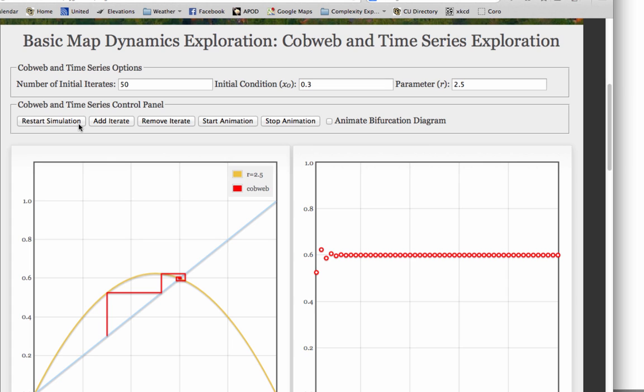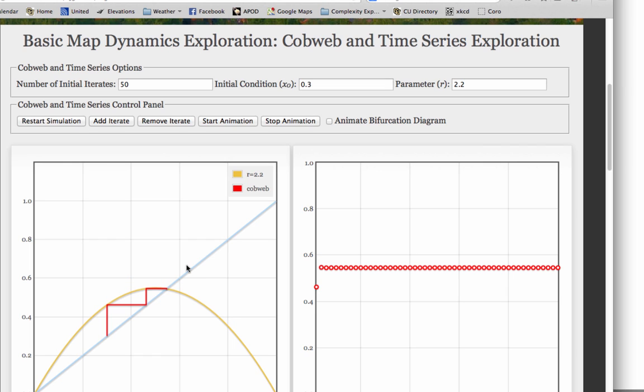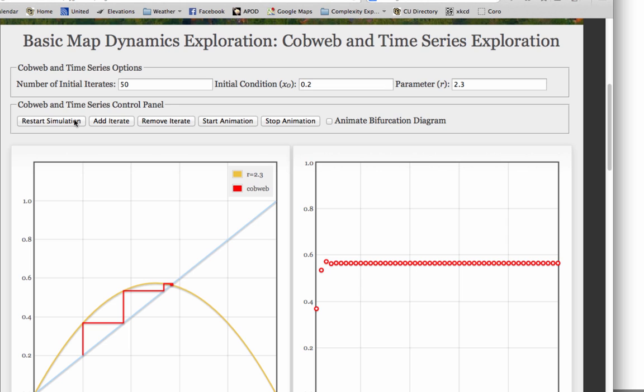Now if you look closely, you'll see that the transient lengths differed in that experiment I just did. r equals 2.2, the population stabilized really quickly. It took a little longer at r equals 2.3. The analogy there is that the population takes a little bit longer to converge to its fixed point ratio of foxes and rabbits.